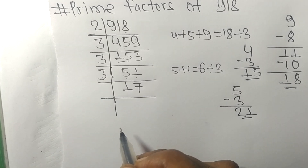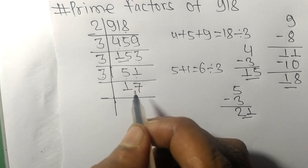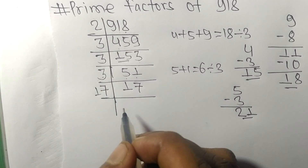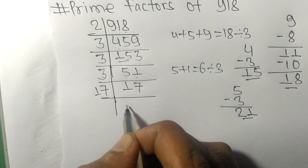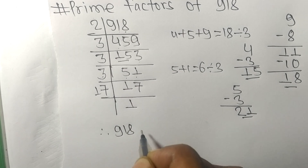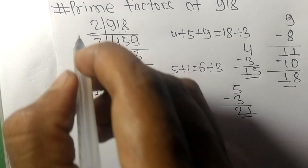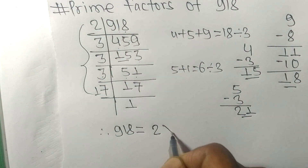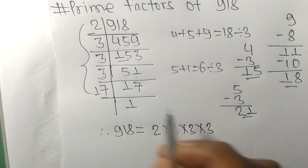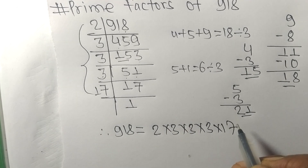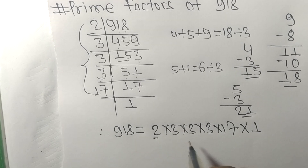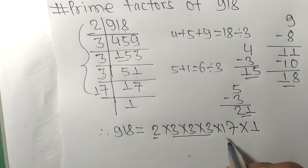17 is a prime number, so it is exactly divisible by 17 only. On dividing we get 1. Therefore 918 equals 2 times 3 times 3 times 3 times 17.